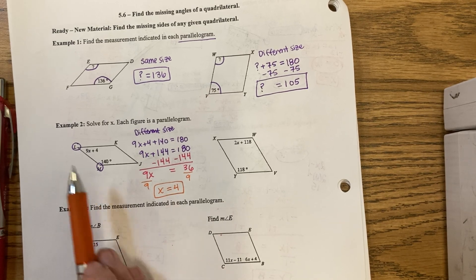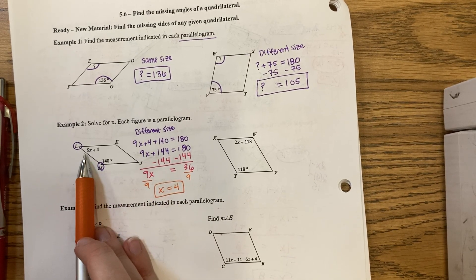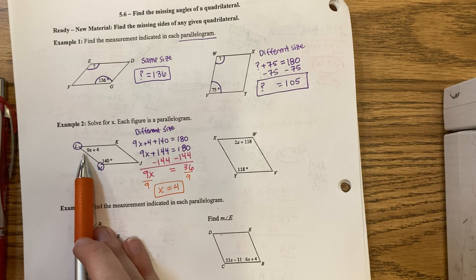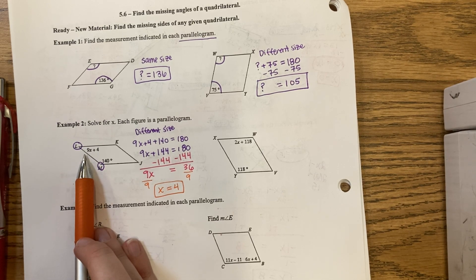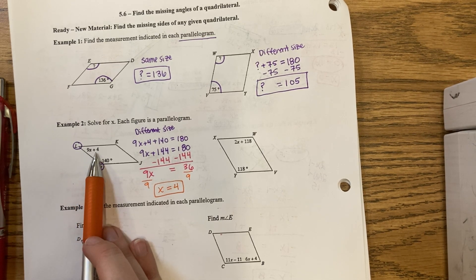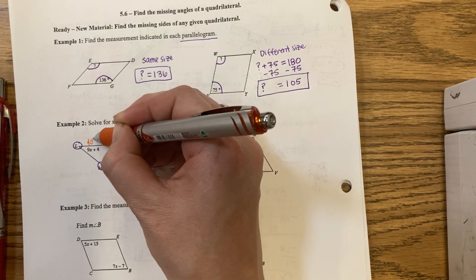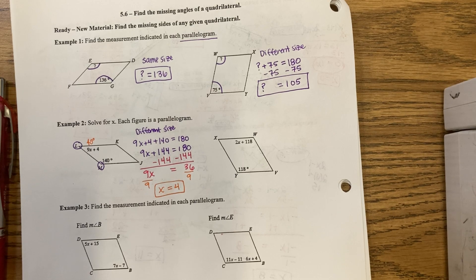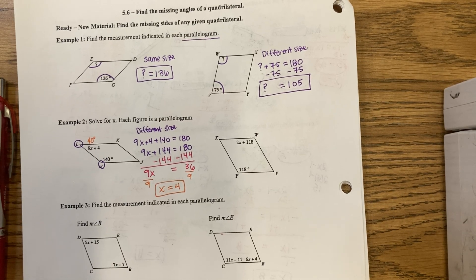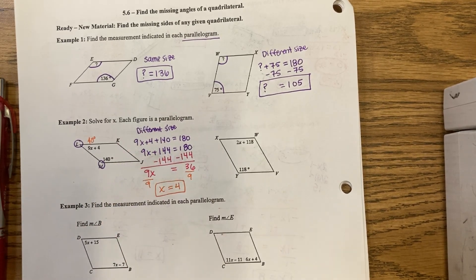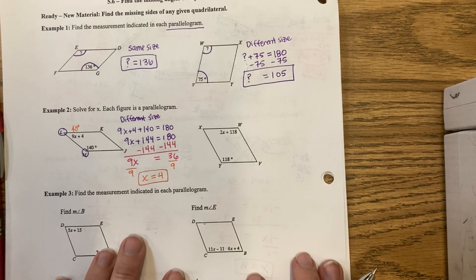This is solved for. If I really wanted to, I could plug it in. And I will get that 9 times 4 is 36, 36 plus 4 is 40. So this would be a 40 degree angle. If it asks me to, but I don't need to, because it doesn't. Next one.